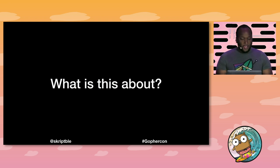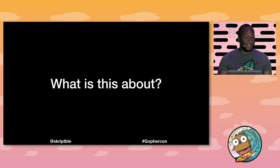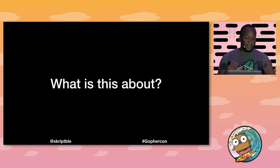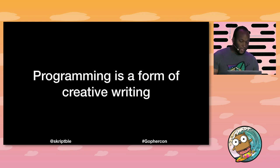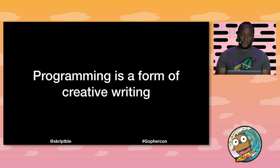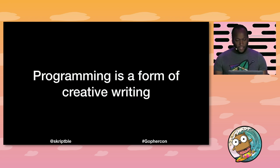In software engineering, we tend to borrow pretty heavily from other industries to get processes, ideas, and best practices. This can be seen in the role of a software architect, which is clearly borrowed from architecture, and in things like lean and agile software development, which are clearly taken from lean and agile manufacturing. To support the idea that we can borrow from the publishing industry, I'm going to assert that programming is a form of creative writing. This is near and dear to my heart because I don't have a computer science degree — I actually have a creative writing degree.